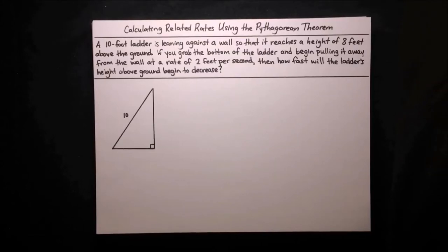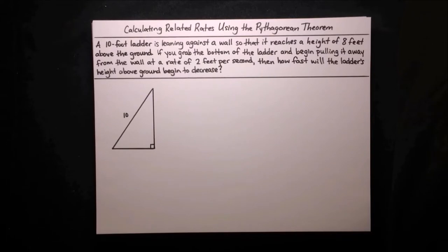In this video, I'm going to show you how to calculate related rates using the Pythagorean Theorem. Here we have a 10-foot ladder that is leaning against a wall so that it reaches a height of 8 feet above the ground. If we grab the bottom of the ladder and begin pulling it away from the wall at a rate of 2 feet per second, then how fast would the ladder's height above the ground begin to decrease?